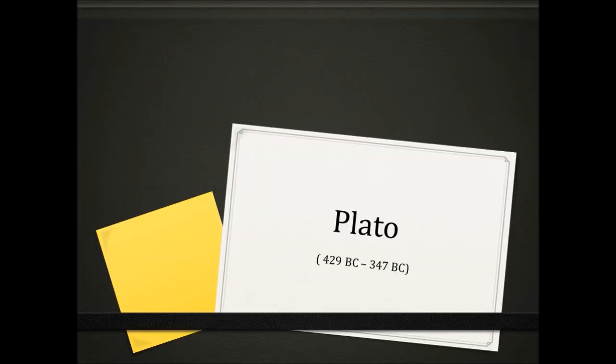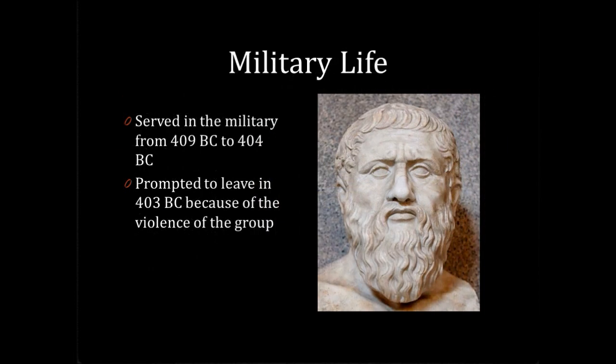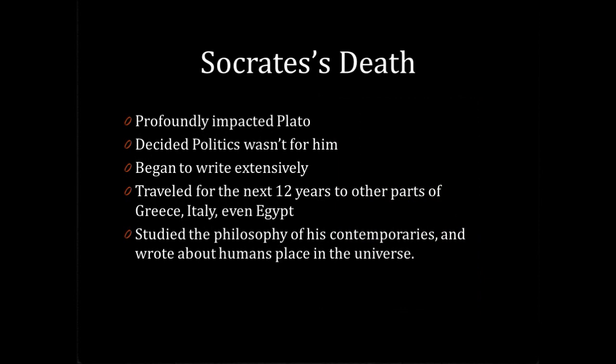Plato was born in Athens, Greece. His birth name was Aristocles, and his nickname Plato, which means 'broad,' was given to him because he was broad in stature. He became a student of Socrates and adopted his style. He grew up hoping to be in politics like his father, and served in the military from 409 to 404 BC, before being prompted to leave in 403 BC because of the violence of the group. Socrates' death profoundly impacted Plato, and he decided that politics wasn't for him and began to write extensively.